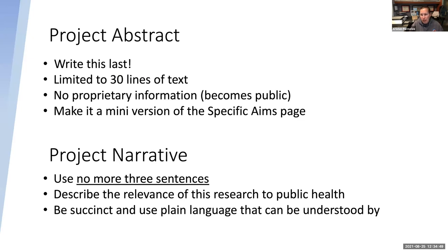The first supporting document is the project abstract — I always write this last. It's limited to 30 lines of text with no proprietary information. In my practice, I just simply make it a simplified specific aims page — I take the specific aims page and shrink it down to 30 lines of text. You include all the high points: the problem, the current solutions on the market, an introduction to the company, and your specific aims. It's literally a mini version of the aims with no proprietary information.